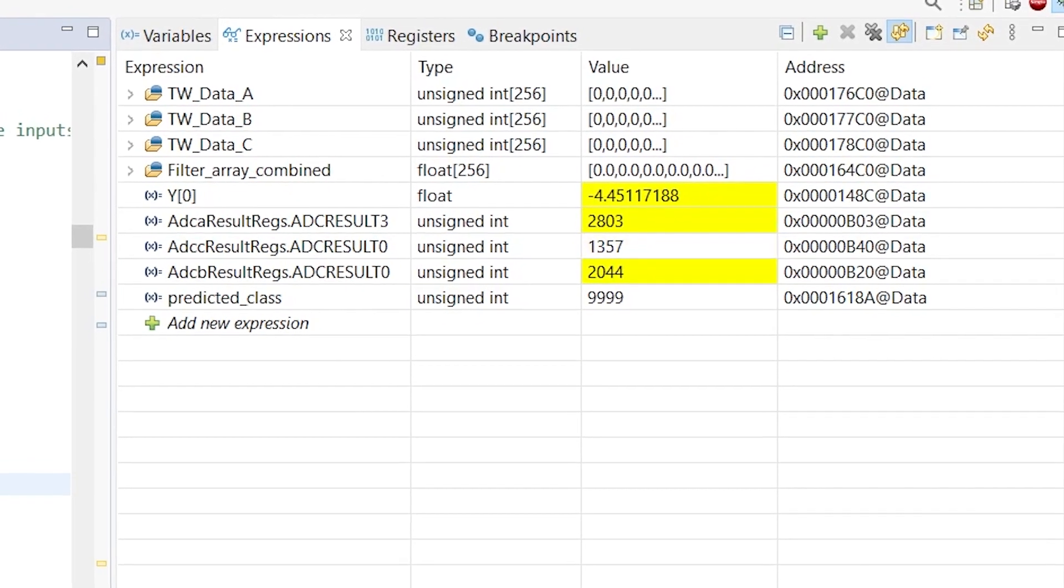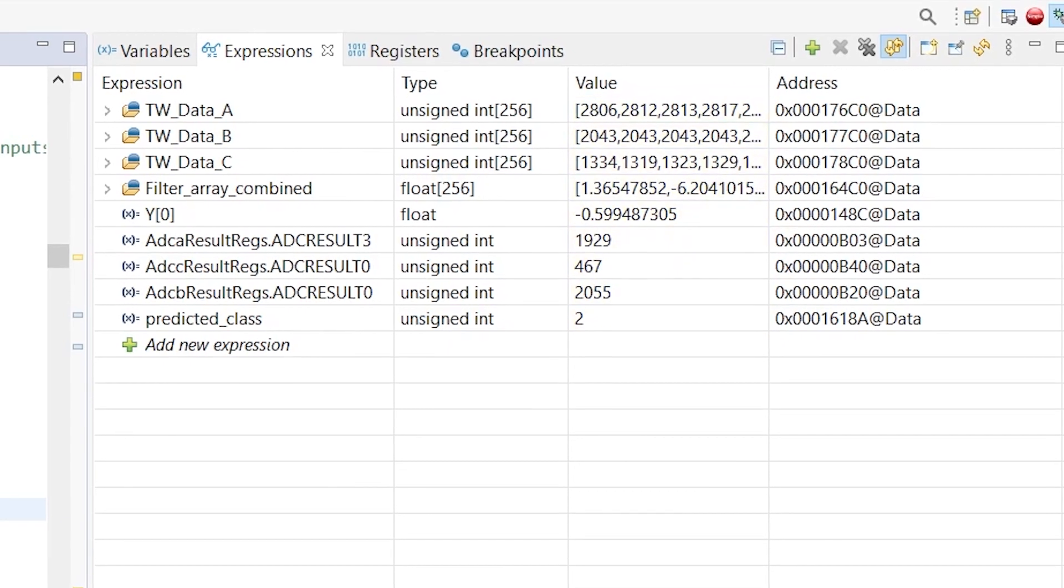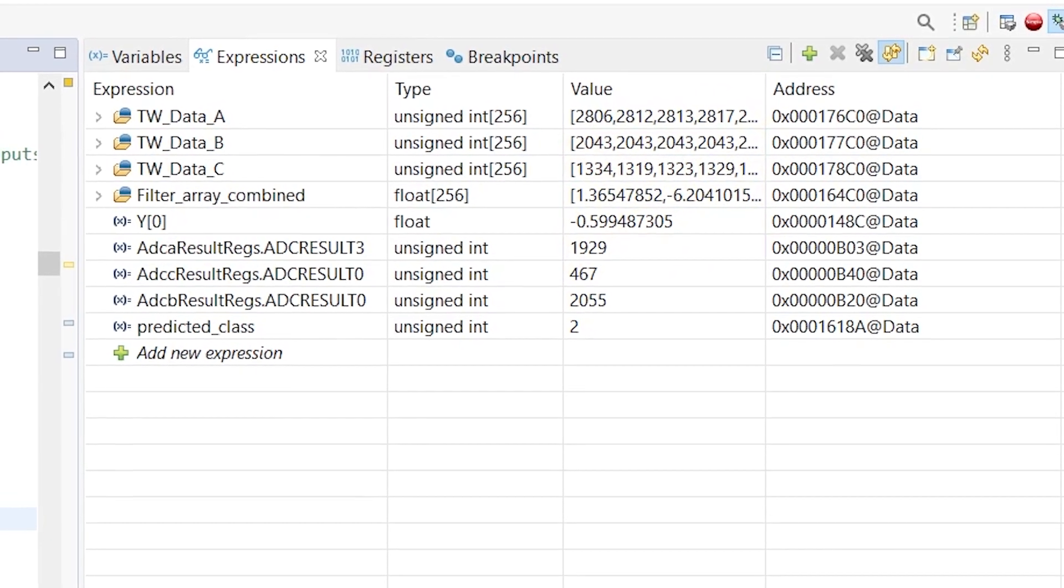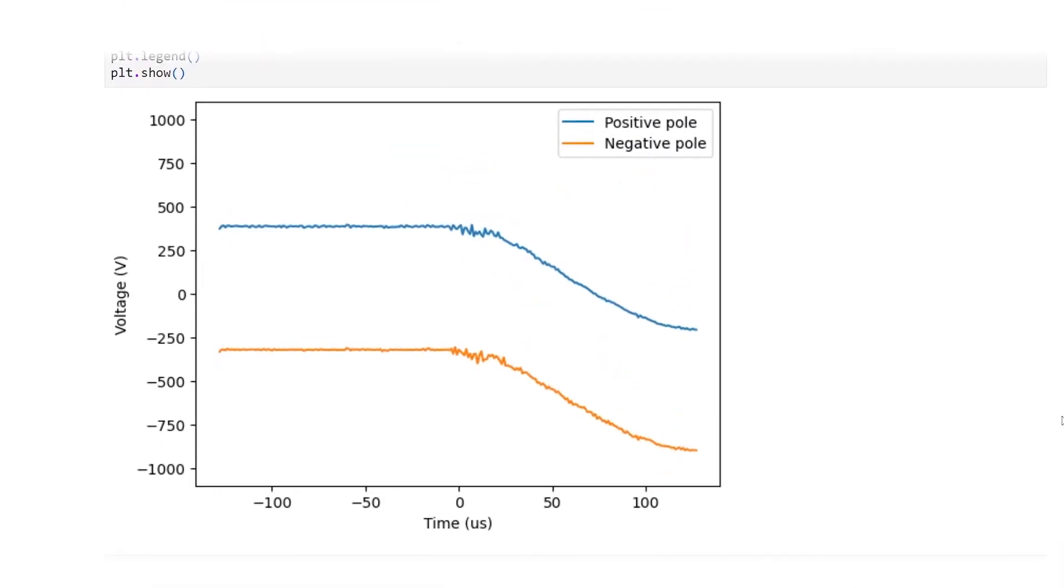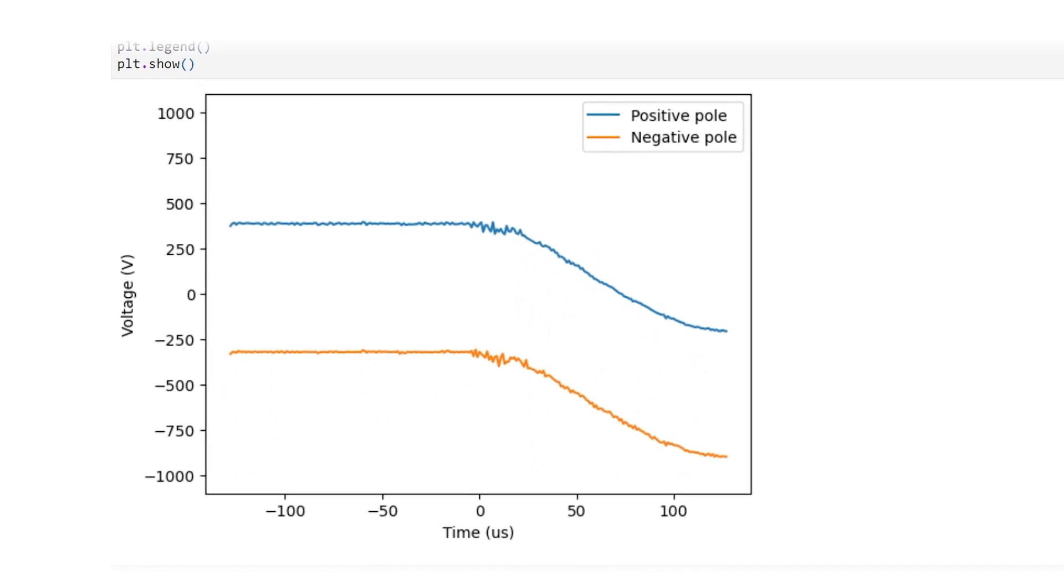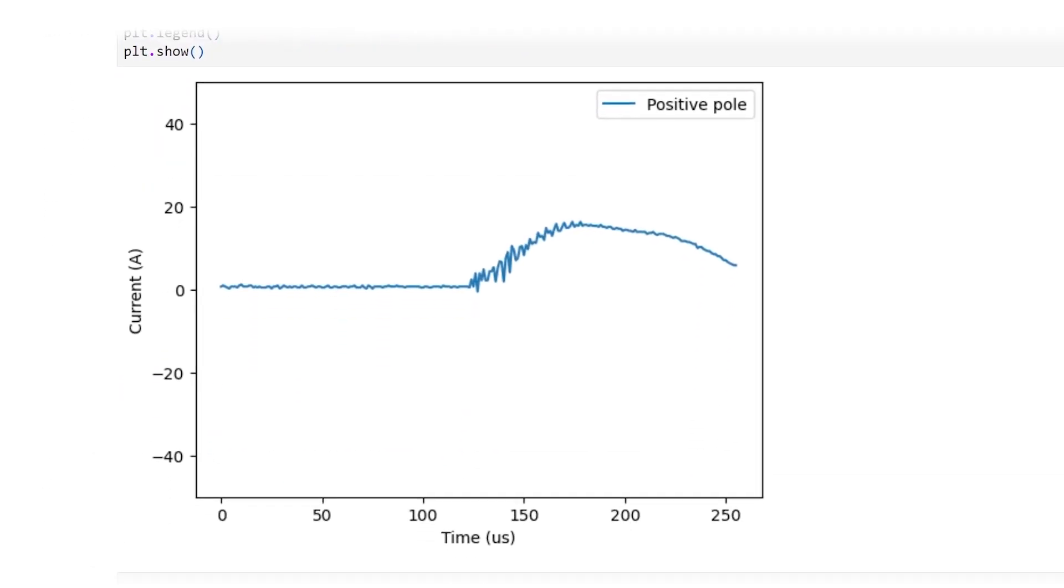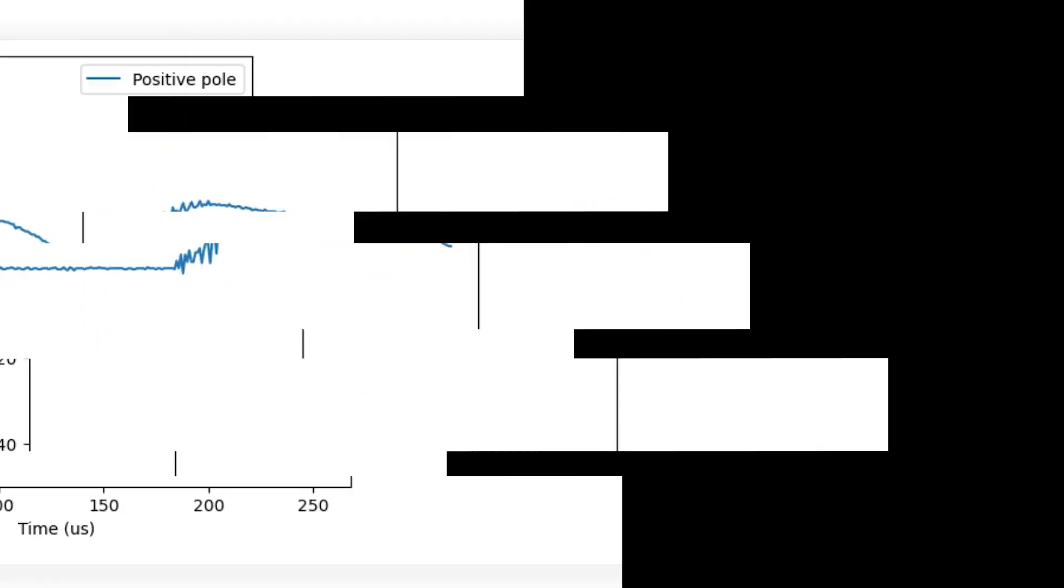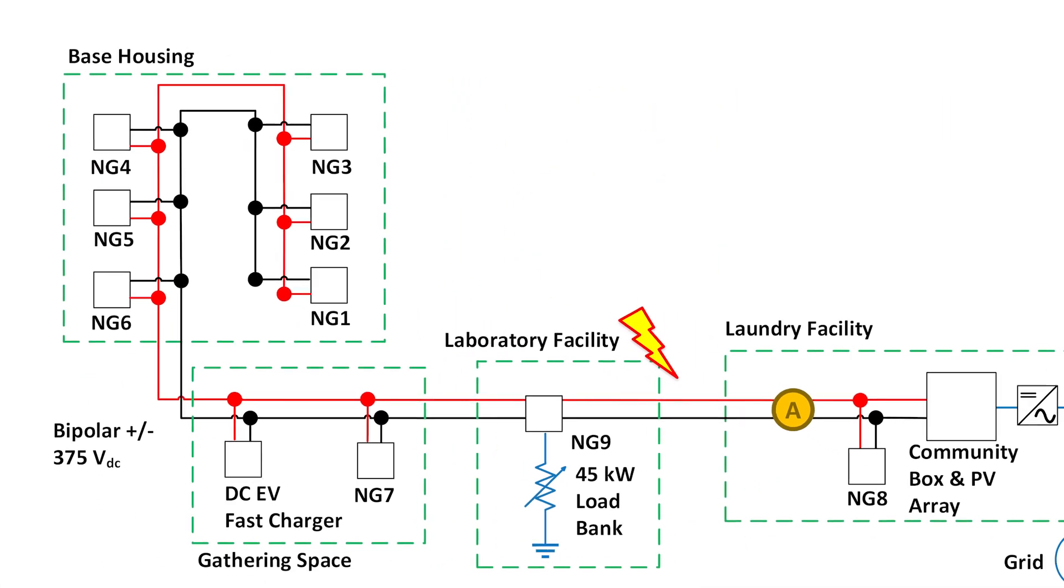As mentioned before, the relay triggers on the traveling wave in about two milliseconds when a fault occurs. Data around the trigger time is captured and sent to the laptop through serial communication. Our algorithm is able to determine the location of the fault and display that to the user.